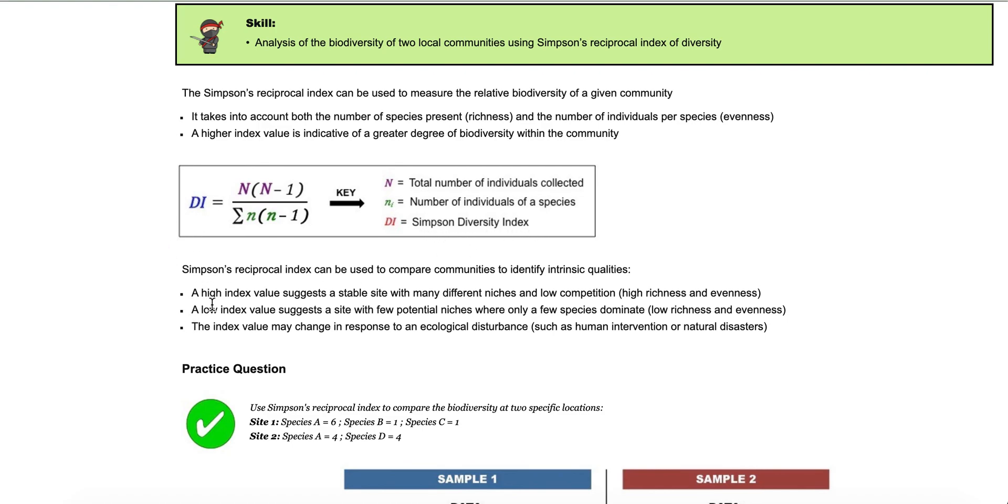When you get a high value, so here it is, this suggests a stable site with many different niches and low competition. So it would suggest high richness and evenness. If you get a low index value, this suggests a site with few potential niches where only a few species dominate. So low richness and evenness.